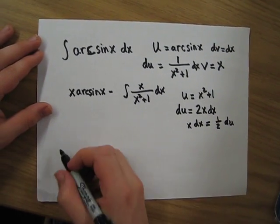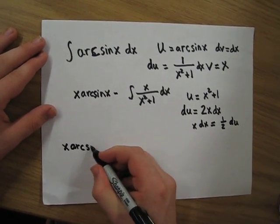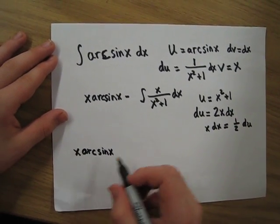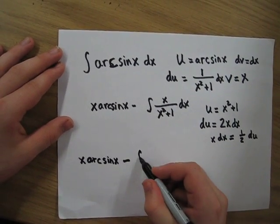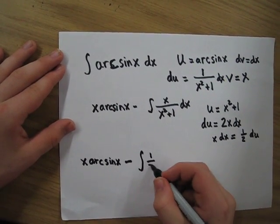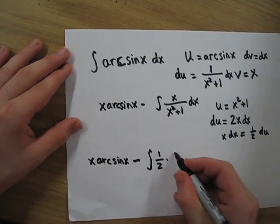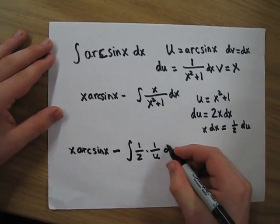When we substitute u into this integral, we still have x arcsine x out in front, and now we have 1 half times 1 over u du.